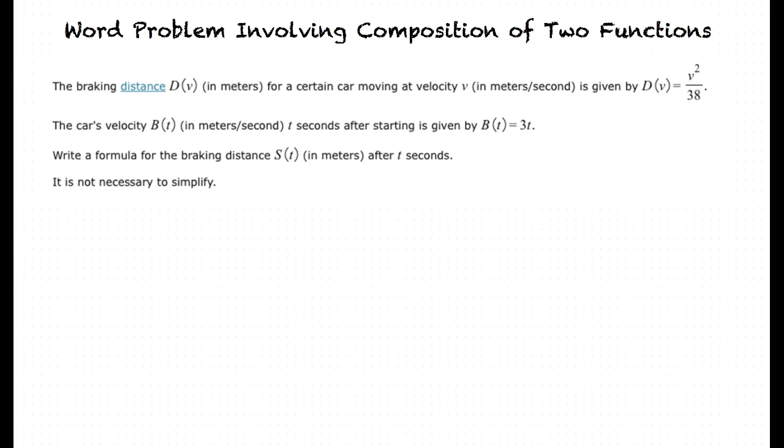The car's velocity, b of t, in meters per second, t seconds after starting is given by b of t equals 3t. Write a formula for the braking distance, s of t, in meters after t seconds. It is not necessary to simplify.